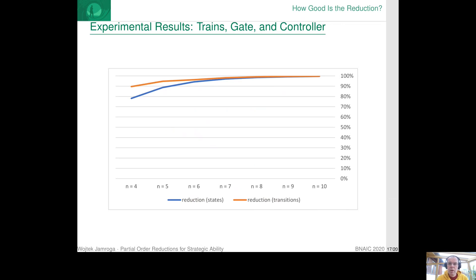For the benchmark of trains, gate and controller, the reduction is even better. In fact, the reduction of the state space and the transition space is exponential in that case. So the models that we obtain are much, much smaller than the full model.